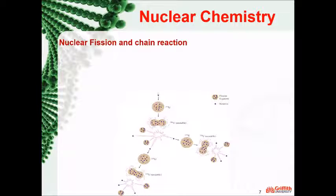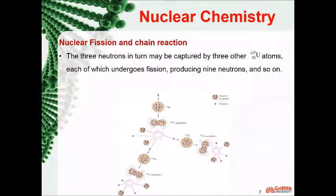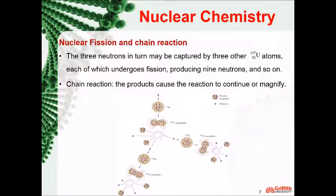The three neutrons in turn may be captured by three other uranium-235 atoms, each of which undergoes fission, producing nine neutrons, and so on. A reaction of this kind, in which the products cause the reaction to continue or magnify, is known as a chain reaction.